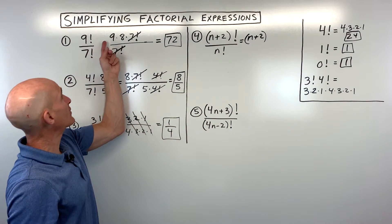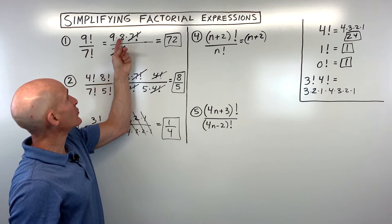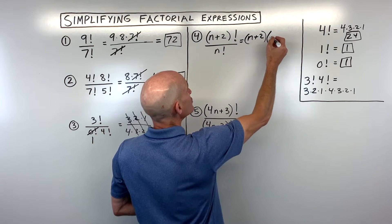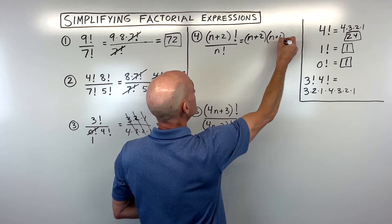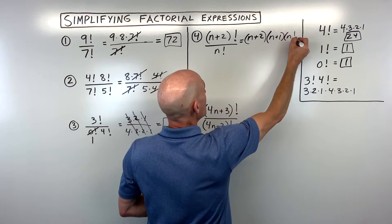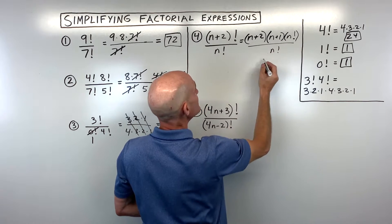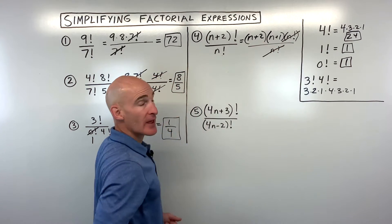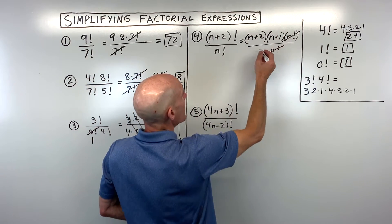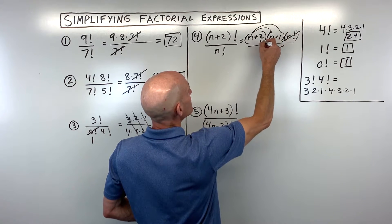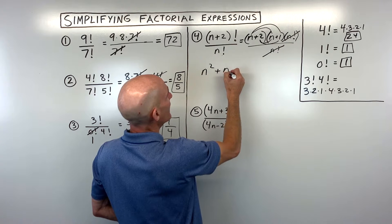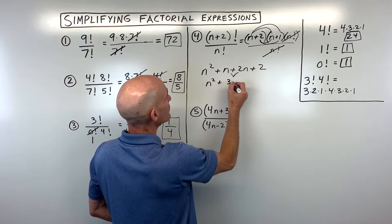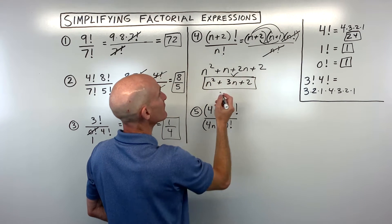The next smaller one after n plus two is n plus one, and subtracting one again gives us n. I can stop here at n factorial because the numerator and denominator match and cancel. So we're left with n plus two times n plus one. We can foil that out: n squared plus n plus two n plus two, which combines to n squared plus three n plus two.